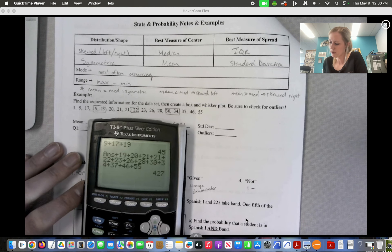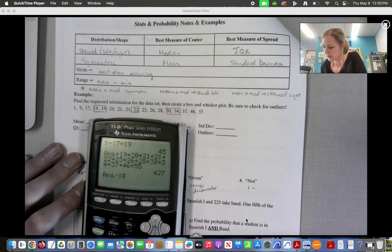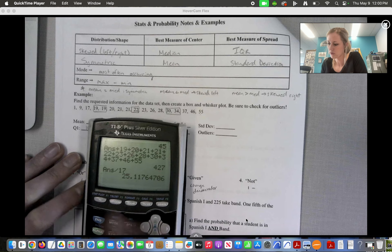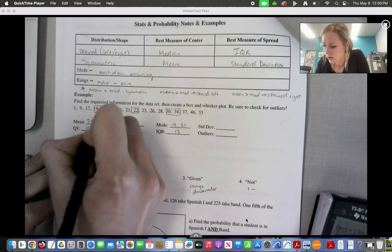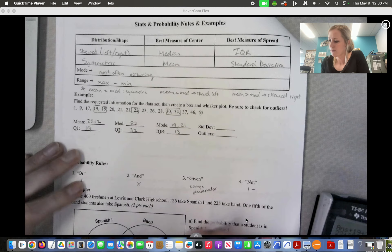All right, so we get 427. We're going to divide by 17, the number of numbers. So we get a mean of 25.12.